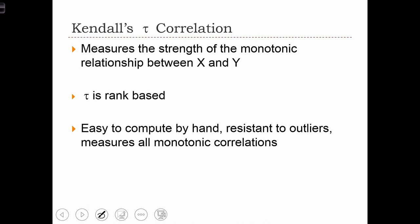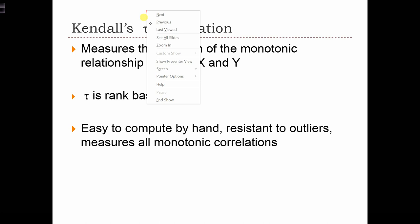The next statistic that we're going to learn is called Kendall's Tau. Tau is the Greek letter for T, and it's spelled like this, T-A-U.